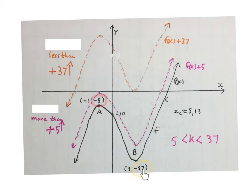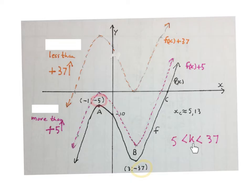But we can't move it up too far. If we move it 37 units up, it's going to miss the x-axis again and we'll only have one root on the left. So k must be bigger than five but less than 37 to give us three distinct roots. We move it up more than five units so that the lower stationary point is above the x-axis, but not so far up that the upper stationary point misses the x-axis again.